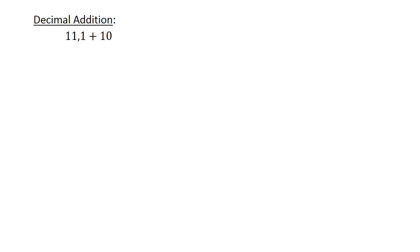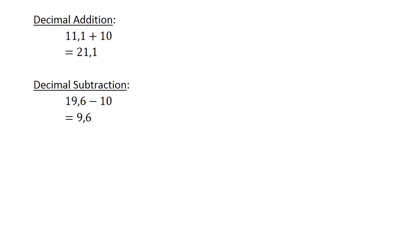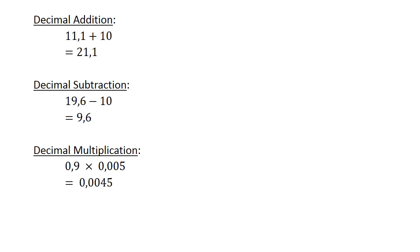Decimal addition: 11.1 plus 10 equals 21.1. Decimal subtraction: 19.6 minus 10 equals 9.6. Decimal multiplication: 0.9 times 0.000005 equals 0.0000045.